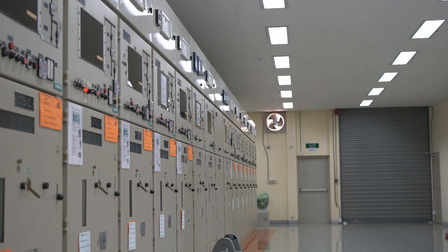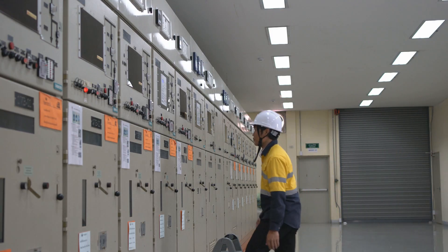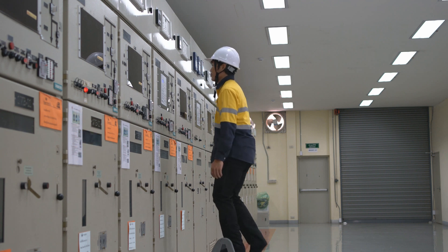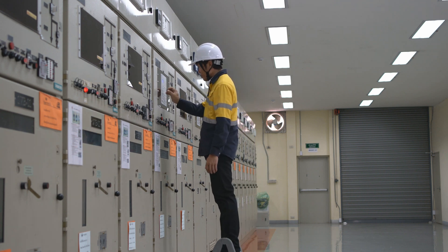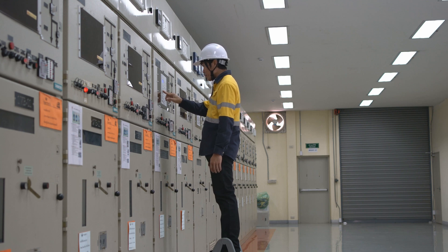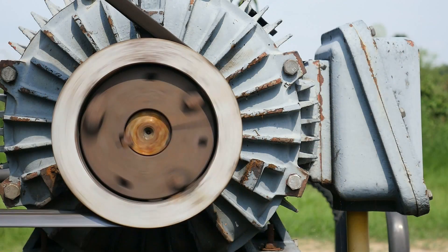This creates 10 additional paths for earth fault currents, complicating fault detection. With so many paths for fault currents, protection relays may fail to detect the correct fault location, causing nuisance trips and incorrect relay operations.